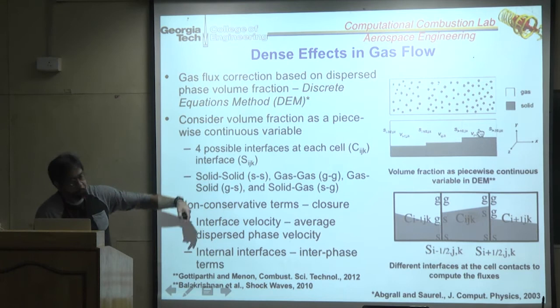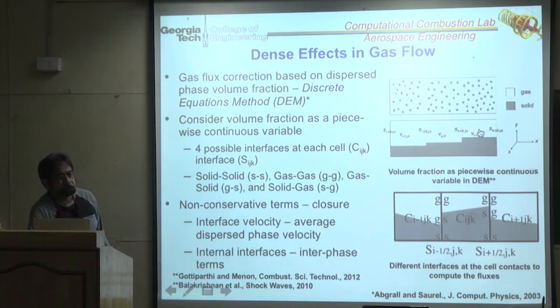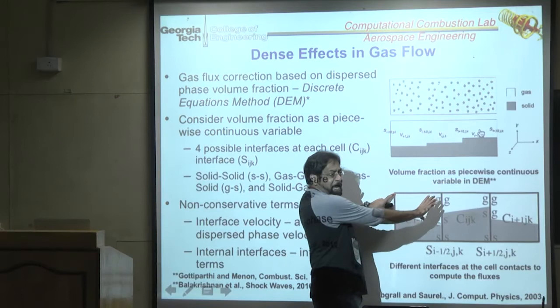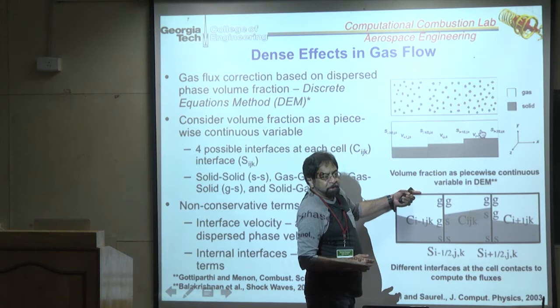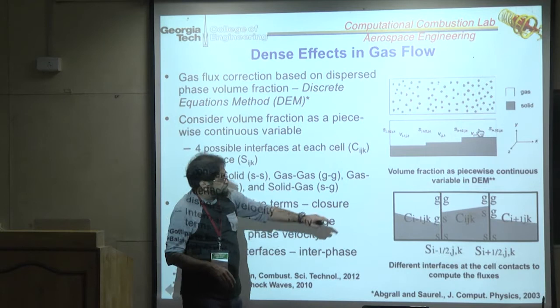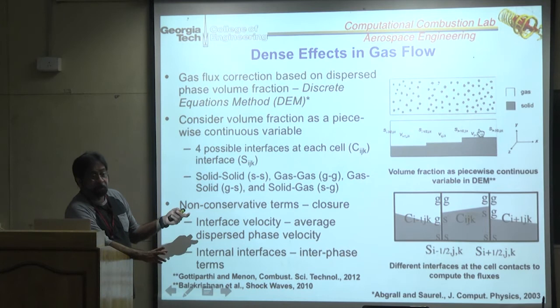Q&A: the mass flux is modified so velocities adjust while gas density remains the same. DEM has an upper limit around volume fraction 0.6, beyond which the code crashes; in practice errors appear above 0.1. Eulerian-Eulerian can go up to 0.9 but not 100% — at 100% you must draw the interface explicitly.